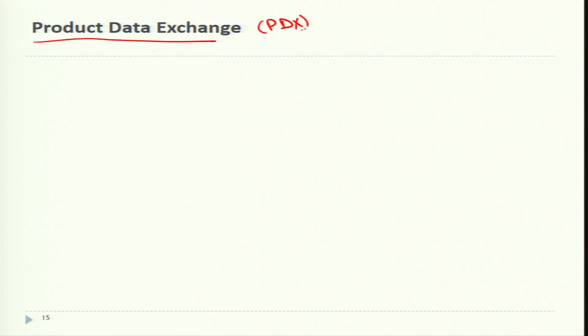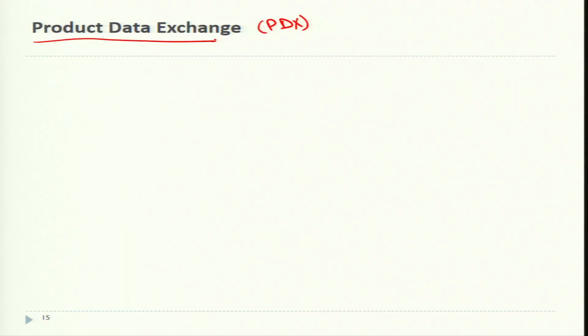Welcome back to the week where we are discussing the Decision Support System for Computer Aided Design and Computer Aided Manufacturing. In this lecture, I will discuss Product Data Exchange, also known as PDX, which is a method of data exchange used to translate between different CAD programs and CAX programs. CAX means it could be Computer Aided Engineering, Computer Aided Manufacturing, or Additive Manufacturing.